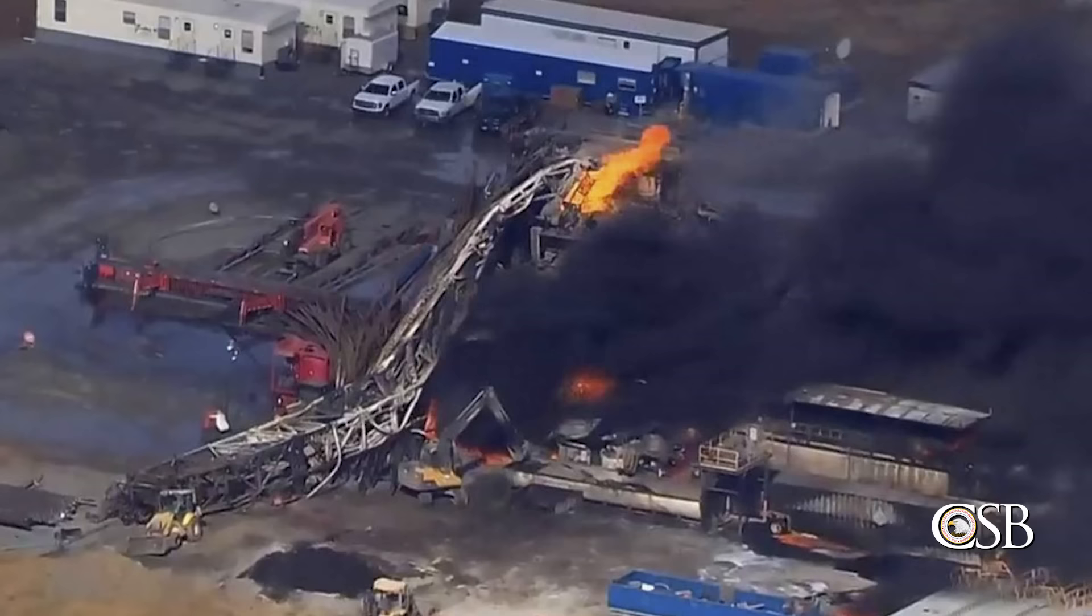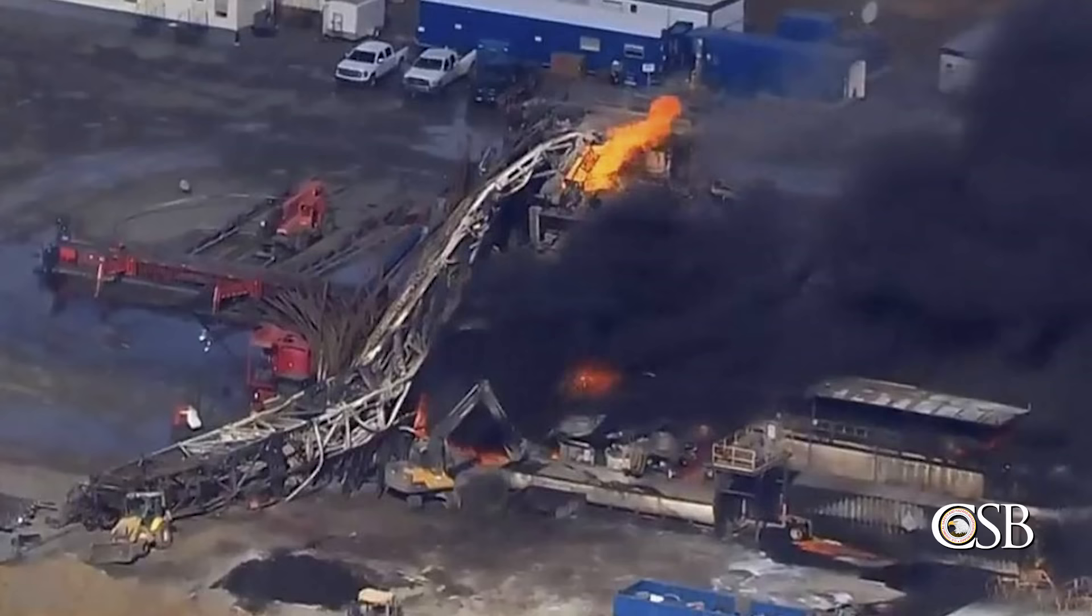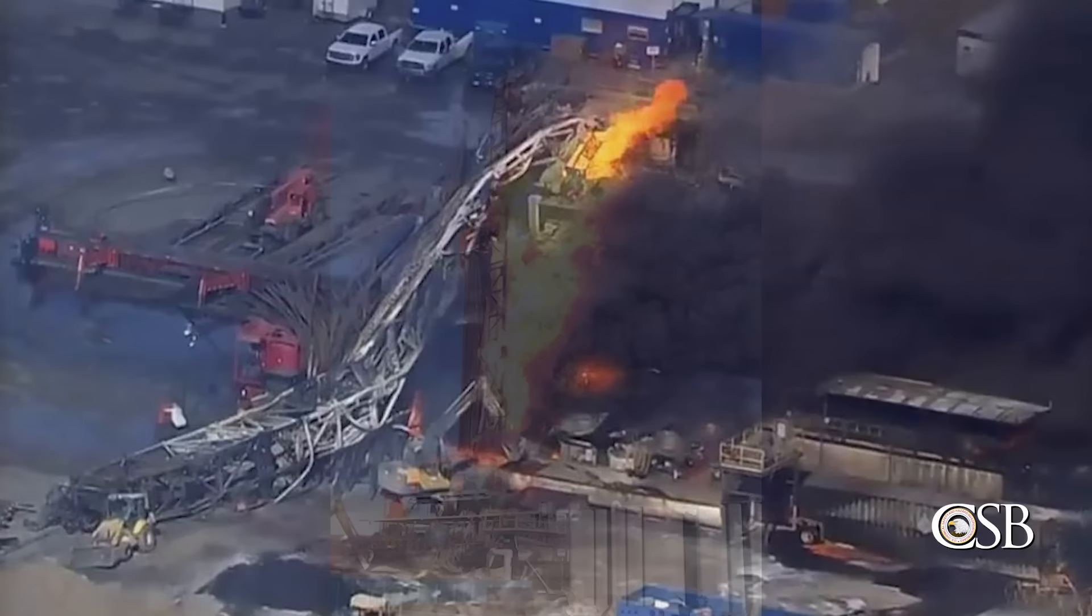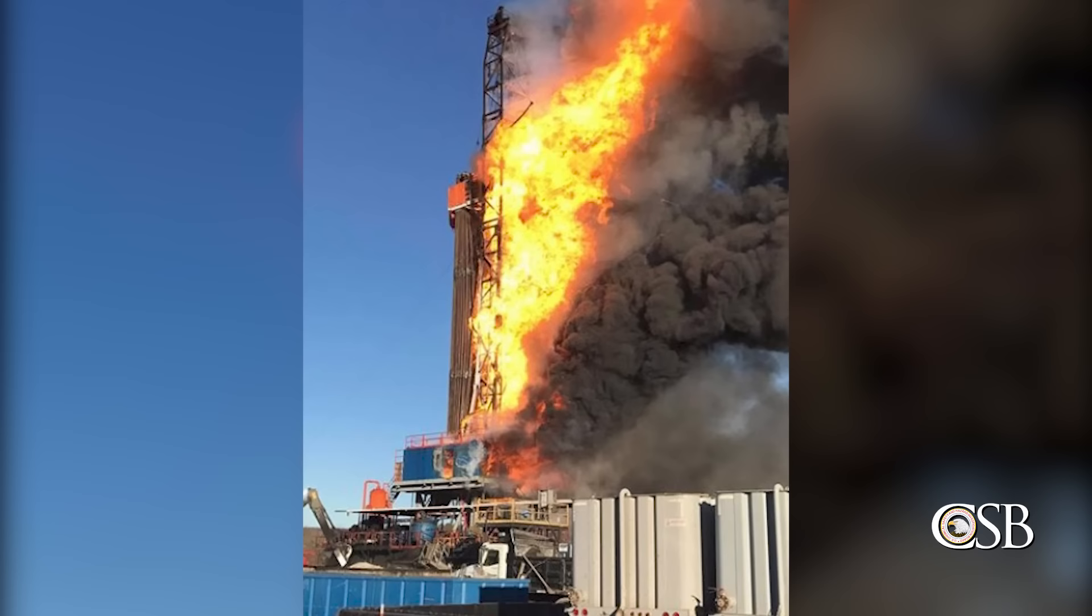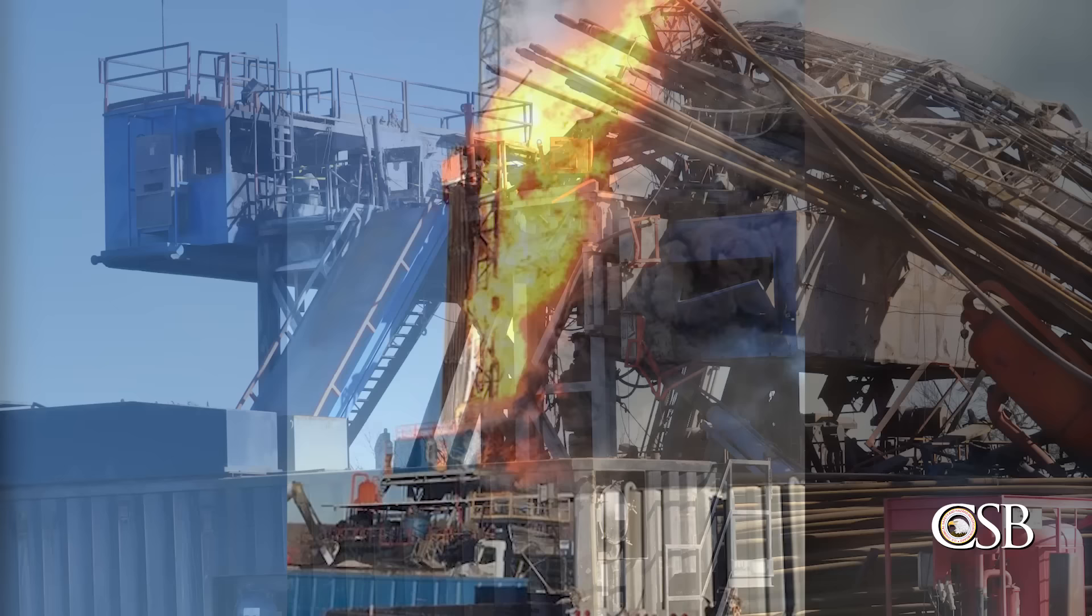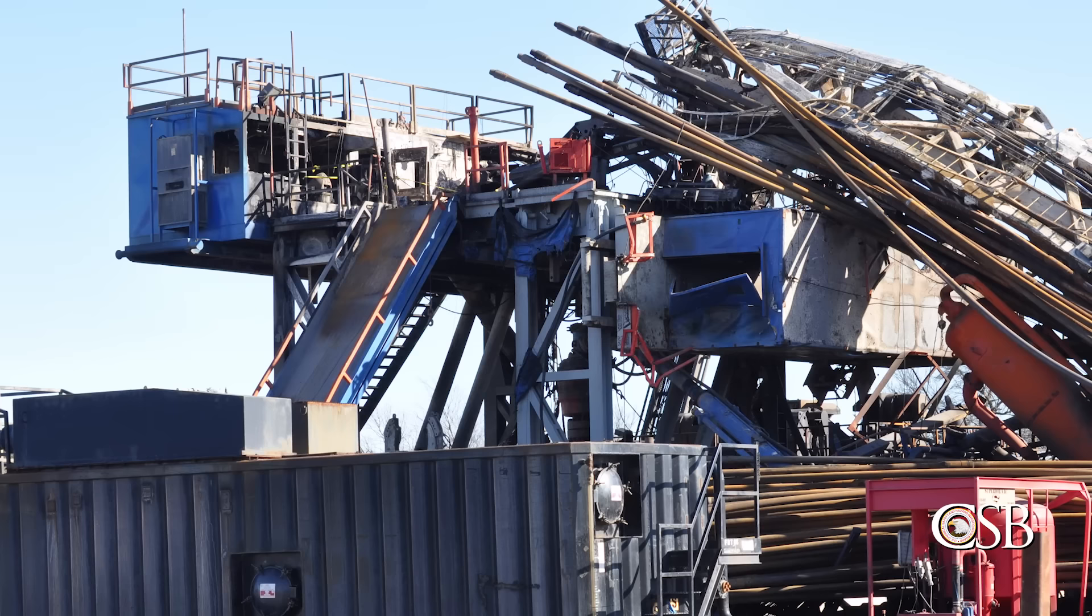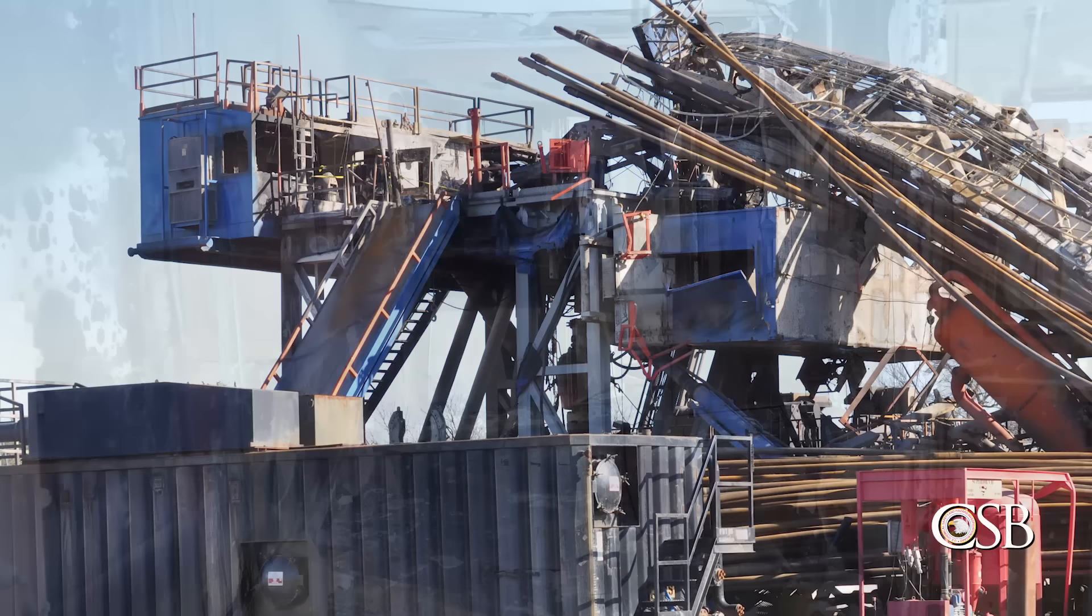When the blowout started, two crew members on the rig floor ran inside the driller's cabin. Three other crew members were already in the driller's cabin, and all five workers were killed. It is unknown how long the victims remained alive inside the driller's cabin, but they had no viable escape routes. There were two exit doors from the driller's cabin, but both of those exit doors were blocked by flames after the gas and mud ignited. The CSB concluded that had the fire rating of the driller's cabin been insured for a minimum time with emergency escape options from the floor or from the back wall, there could have been a better chance for the workers inside to have survived this incident.